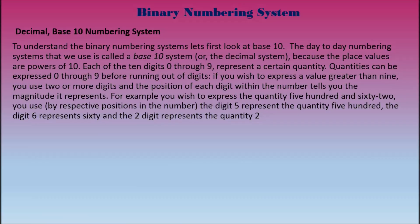To understand the binary numbering system, let's first look at base 10. The day-to-day numbering system that we use is called base 10 or the decimal system because the place values are powers of 10. Each of the 10 digits, 0 through 9, represent a certain quantity. Quantities can be expressed through 0 through 9 before running out of digits. If you wish to express a value greater than 9, you use two or more digits, and the position of each digit within a number tells you the magnitude it represents.